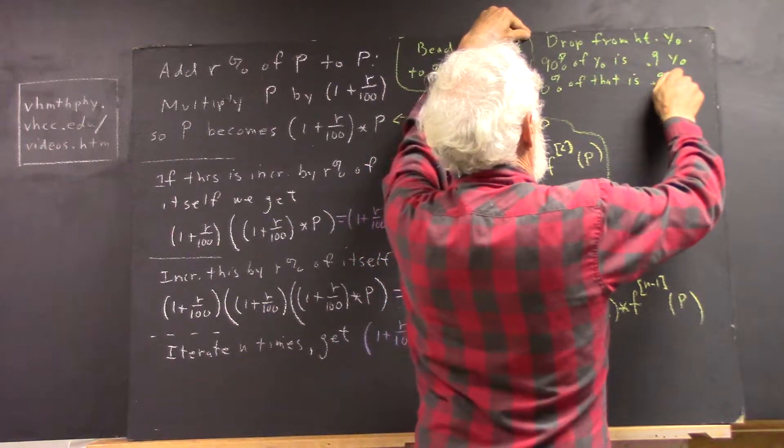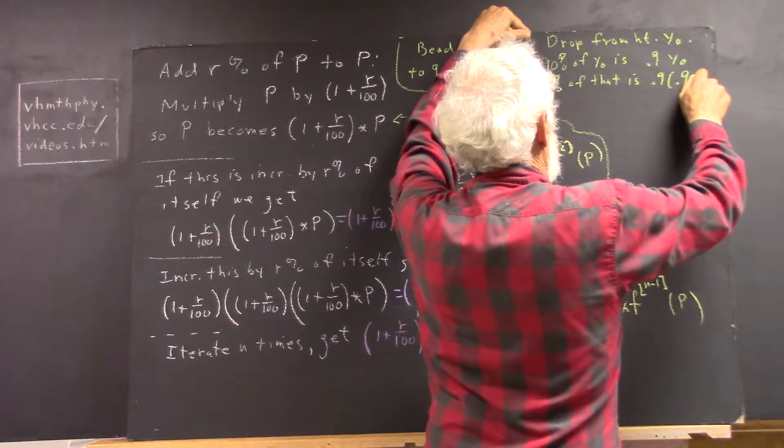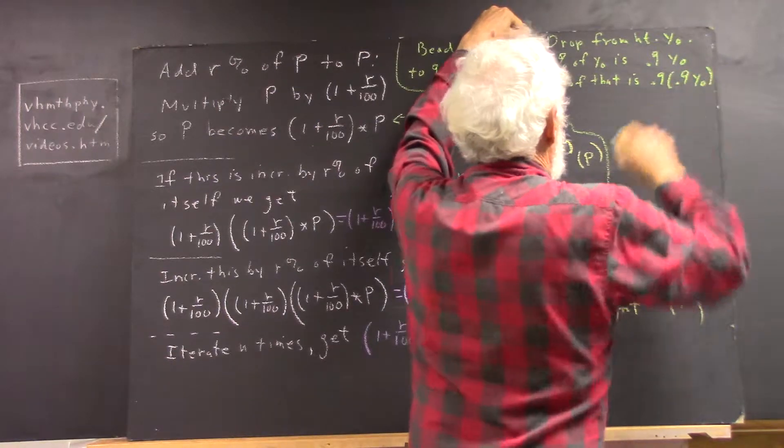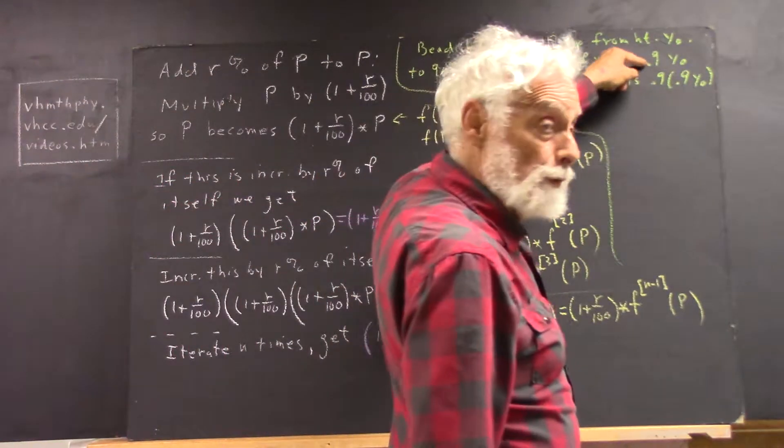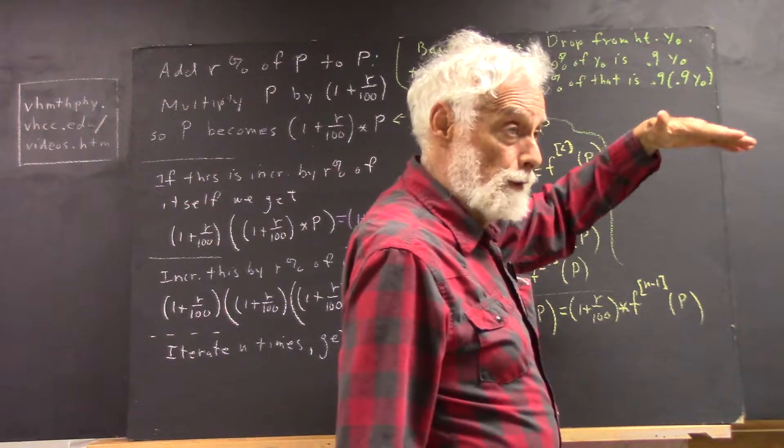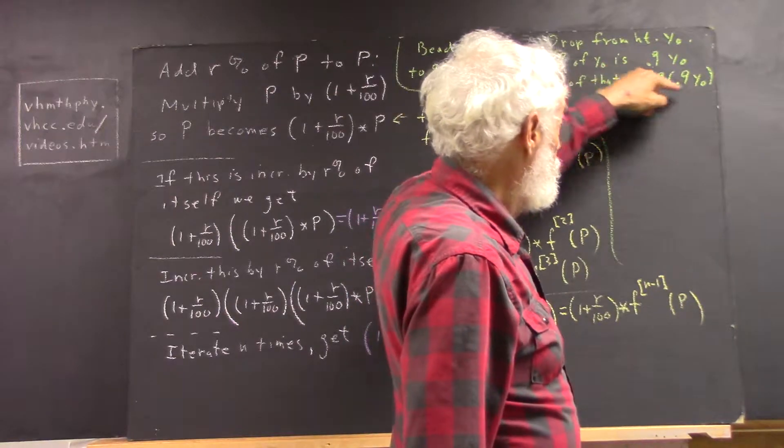So that's 0.9 multiplied by 0.9 why not. Okay, because that's where it dropped from when it started its second drop, it went to this height.